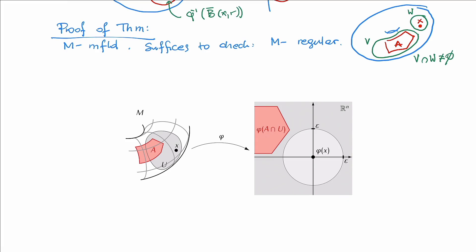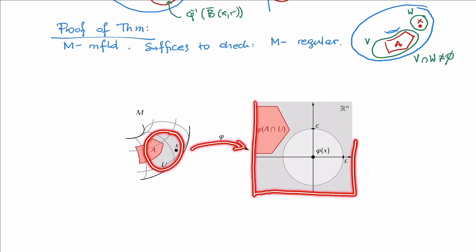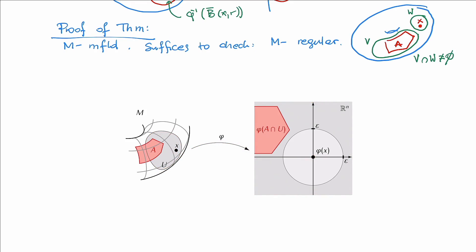Since M is a manifold, we can find an open neighborhood of X and a coordinate chart defined on it. Without loss of generality, we can assume this coordinate chart maps this open neighborhood to the whole space Rn, and that the point X is mapped to the origin of Rn. So altogether, this coordinate chart gives a homeomorphism between this open neighborhood U of X and Rn, sending X to the origin 0.